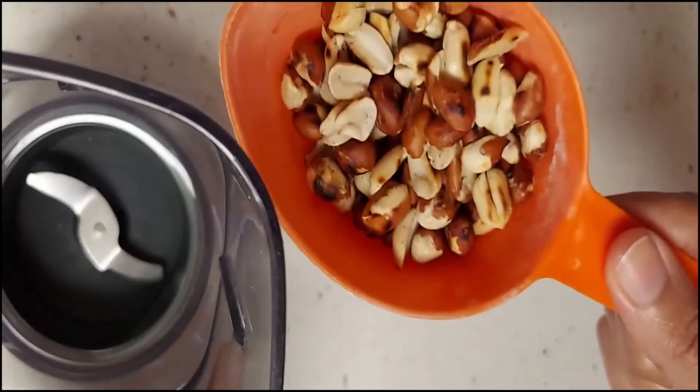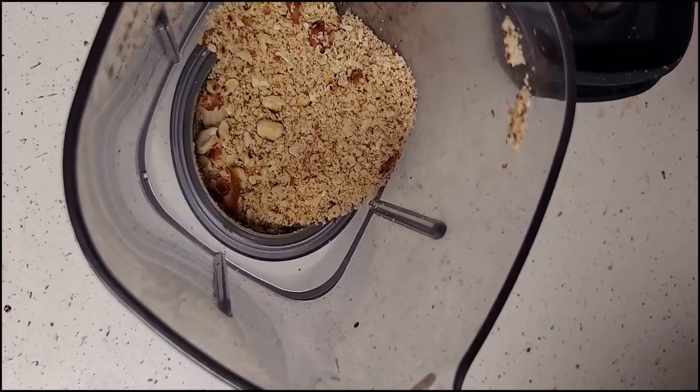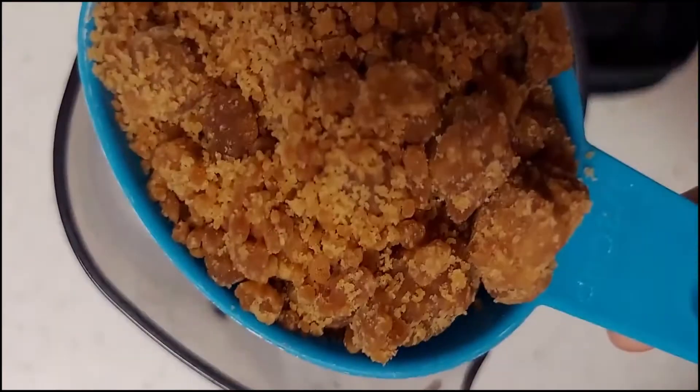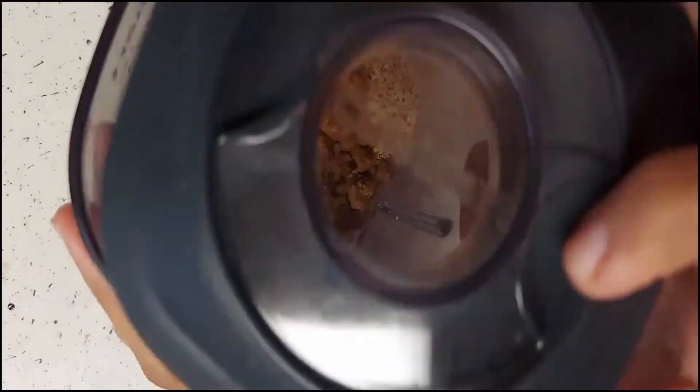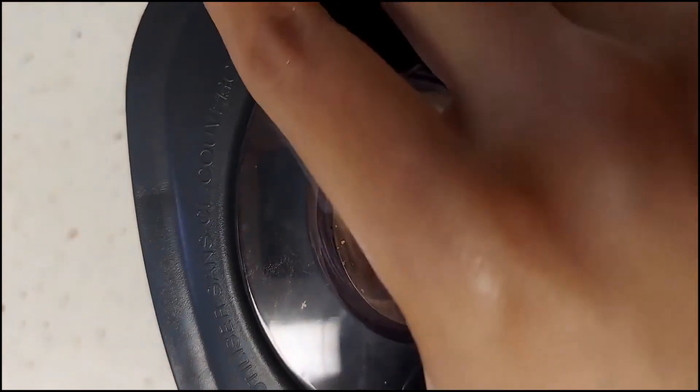Take half cup of roasted peanuts. You can also remove the skin of the peanuts. Once it is blended well, add half cup of jaggery to this and blend it together. Keep it aside.